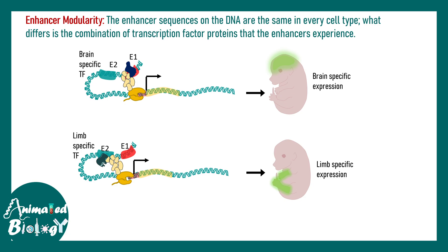In one scenario, there are two enhancers, E1 and E2. A brain-specific transcription factor (depicted in blue) interacts with enhancer 1 and drives the output of gene A to a particular degree — this is brain-specific output. Alternatively, a limb-specific transcription factor (the green one) selects enhancer element 2 and produces a completely different output. This is known as the modularity of the enhancer.